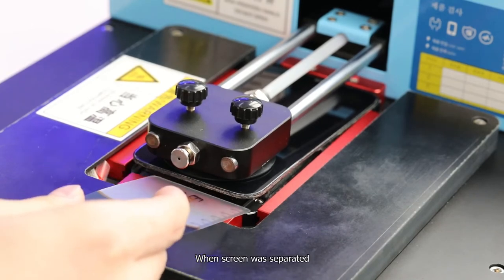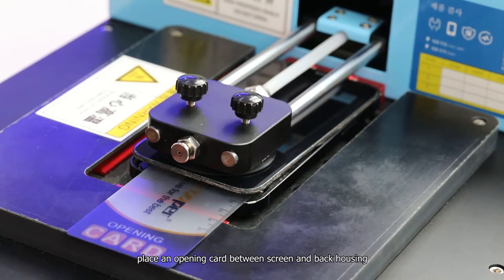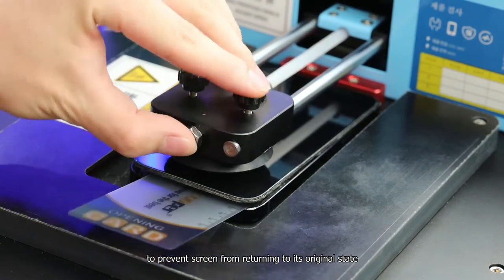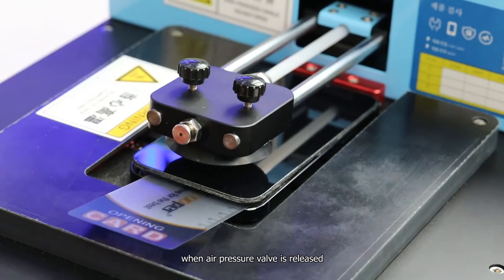When the screen is separated, place an opening card between the screen and back housing to prevent the screen from returning to its original state when the air pressure valve is released.